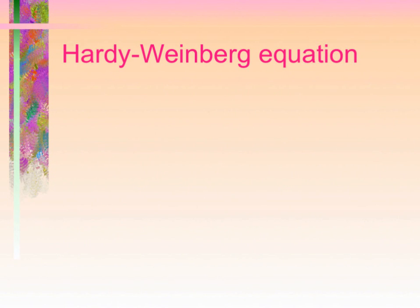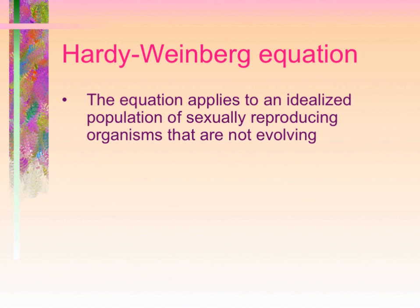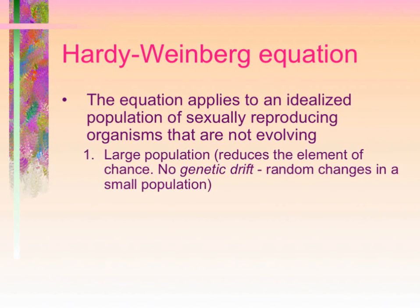The Hardy-Weinberg equation only works under certain conditions — in an ideal population of sexually reproducing organisms that are not evolving. There are five conditions to remember. The first condition is that the population must be large; this reduces the element of chance. There is no genetic drift — random changes in a small population. For example, if you only have ten individuals and two are randomly struck by lightning, that significantly affects allele distribution. Genetic drift refers to small changes in a gene pool due to such chance occurrences.